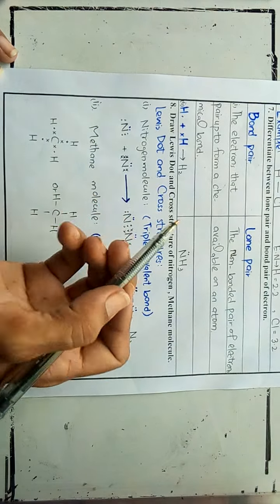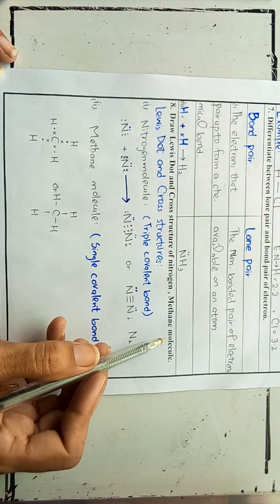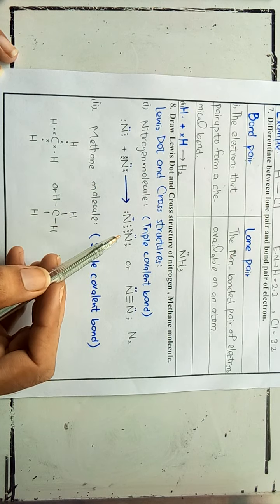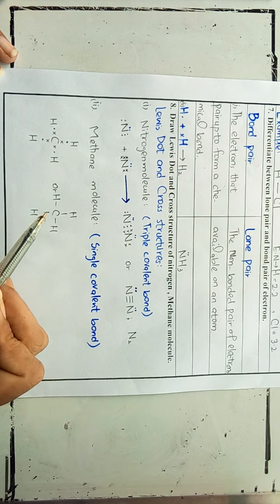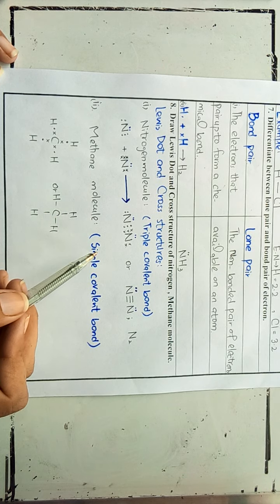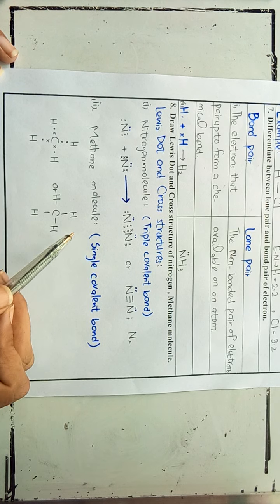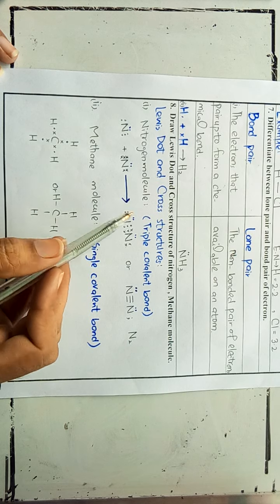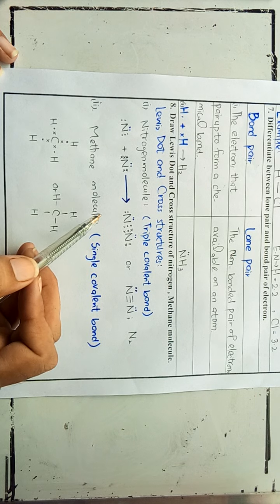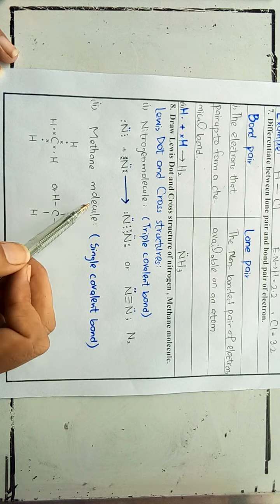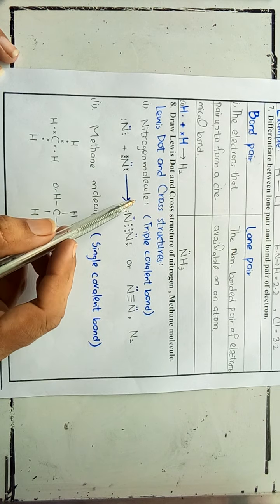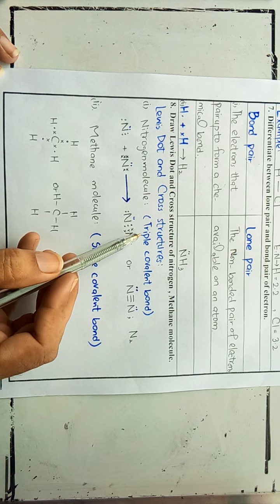Number eight: draw the Lewis dot and cross structure of the nitrogen and methane molecules. Lewis dot and cross structure means the small dots or crosses that are around the symbol of an element and they represent electrons. This is a way of representing the types of covalent bond, and the diagram obtained by this method is called the Lewis structure diagram. The first is the nitrogen molecule — nitrogen forms a covalent bond which is triple in nature.